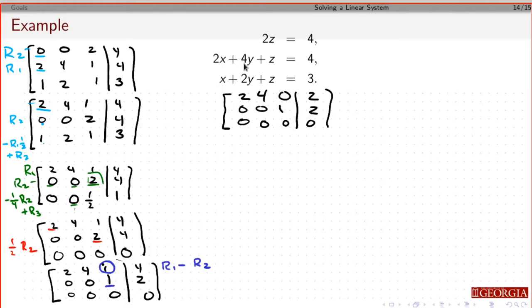So now everything above this pivot is 0, so I'm done. I'm going to come up. This is my pivot there. That's the pivot I used there. The first thing I want to do is I want to get a 1 there. So I'm basically going to take 1/2 times row 1.